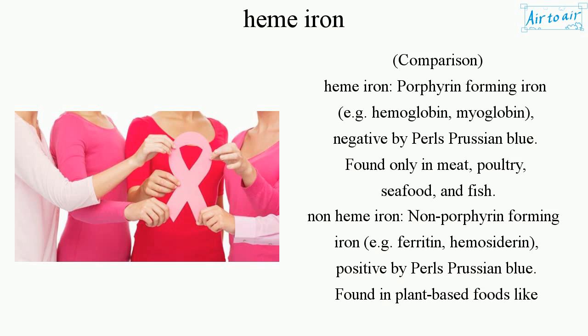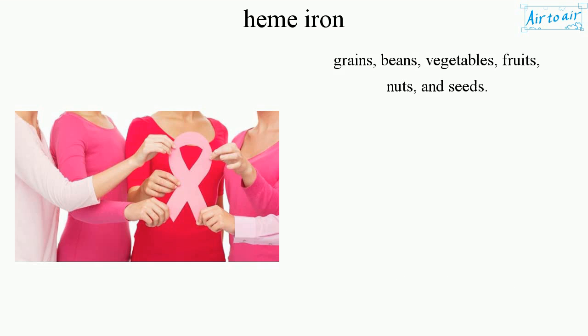Non-heme iron: non-porphyrin forming iron. Examples include ferritin and hemocyterin. Positive by Pearls Prussian blue stain. Found in plant-based foods like grains, beans, vegetables, fruits, nuts, and seeds.